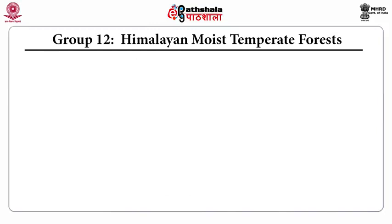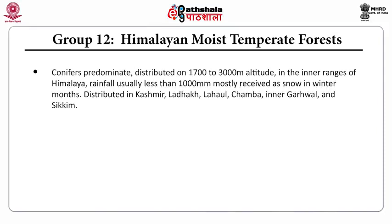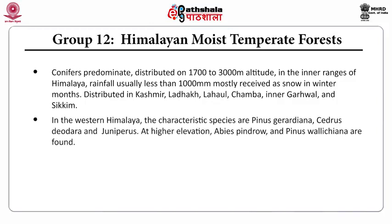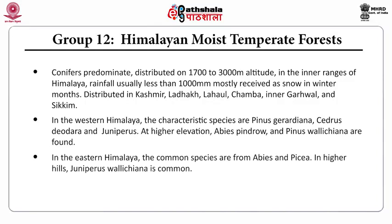Group 13 is the Himalayan dry temperate forest. In this forest, conifers predominate, distributed at 1,700 to 3,000 meter altitude in the inner ranges of the Himalaya. Rainfall is usually less than 1,000 millimeters, mostly received as snow in winter months. These forests are distributed in Kashmir, Ladakh, Lahaul, Chamba, Inner Garhwal, and Sikkim. In Western Himalaya, the characteristic species are Pinus gerardiana, Cedrus deodara, and Juniperus. At higher elevations, Abies pindrow and Pinus wallichiana are found. In the Eastern Himalaya, the common species are Abies and Pinus. In higher hills, Juniperus wallichiana is common.